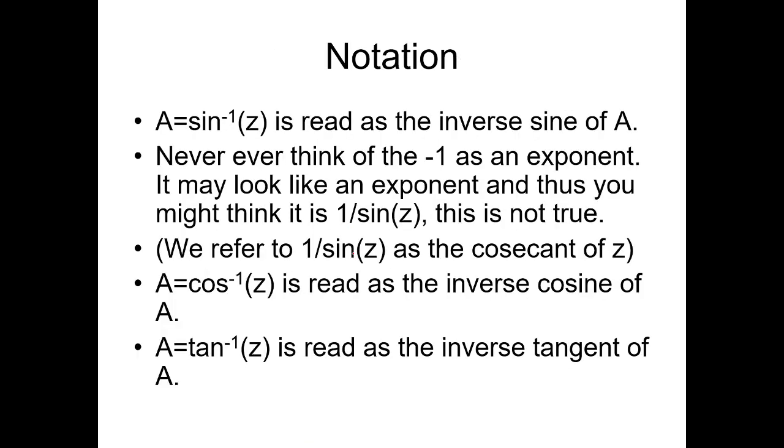For inverse trigonometric functions, the notation is you put negative 1. That is called arc sine. It is read as the inverse sine of A. Some people write arc. We refer to 1 over sine Z as the cosecant Z. A is equal to arc cosine Z is read as the inverse cosine of A. A equals arc tangent of Z is the inverse tangent of A.